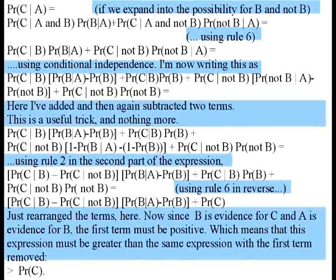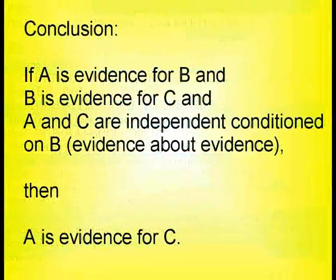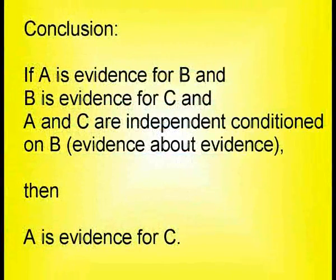Note that the difference will depend on how strong evidence A is for B and how strong evidence B is for C. And this isn't the easiest proof in the world, but the job is done now. So if we have conditional independence, then A will be evidence for C.